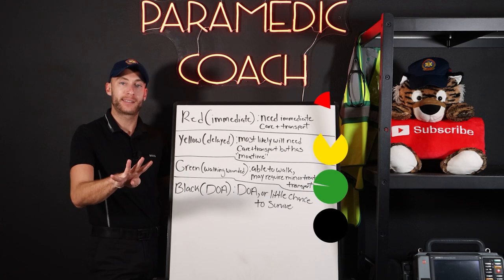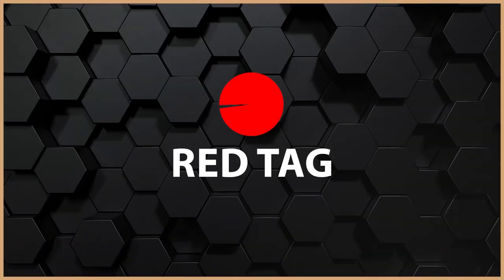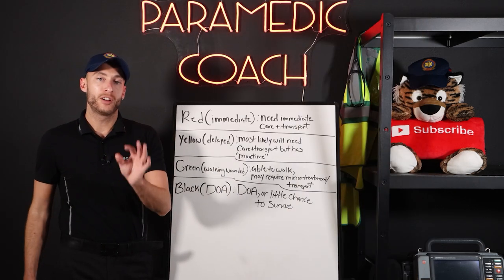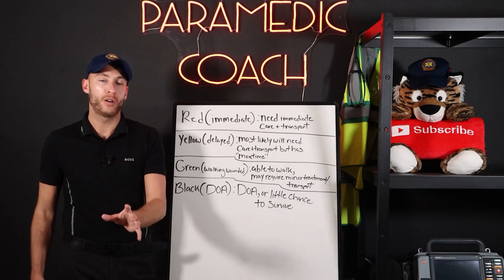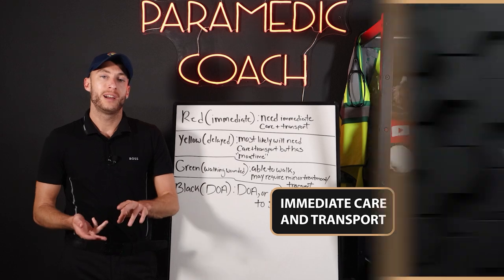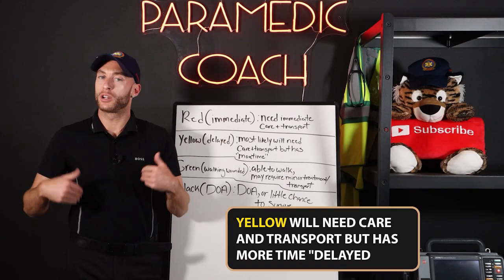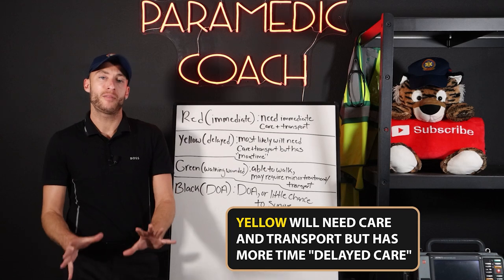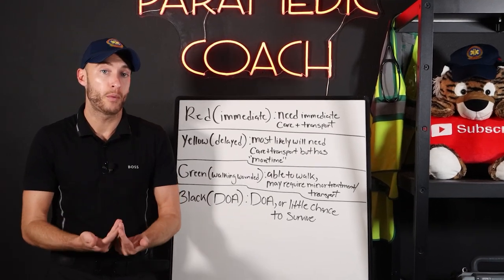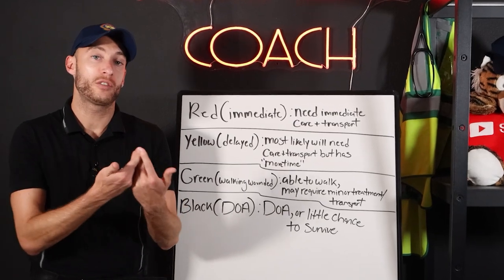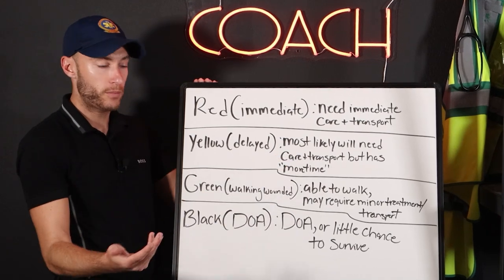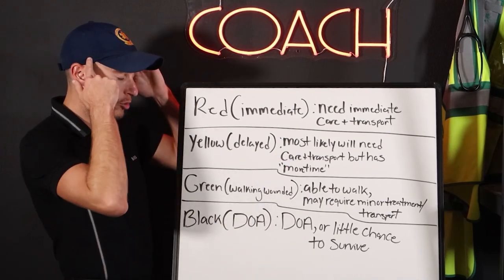When we do our primary triage and tag our patients, there are four main tags. First is red — immediate or critical. These patients do have a chance of survival, but they need immediate care and immediate transport. Yellow is delayed. They're going to need care and transport, but they have more time — they may have hours versus minutes.